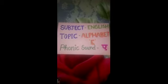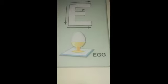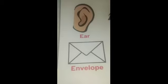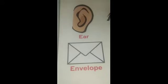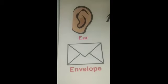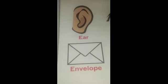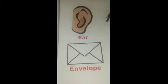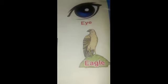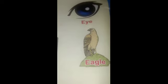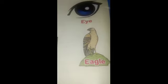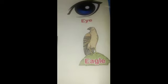The phonic sound of alphabet E is egg. Hen gives us egg. E for ear — we hear with our ear. E for envelope — envelope has a rectangle shape. E for eye — I have two eyes. E for eagle — eagle has a shadow.